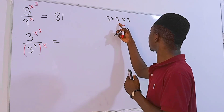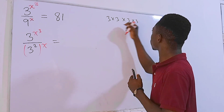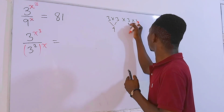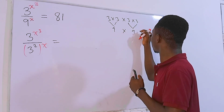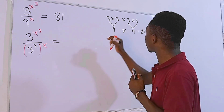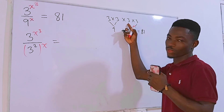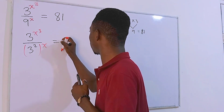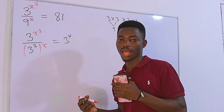3 times 3 is 9, times 3 times 3 gives us another 9, and 9 times 9 is 81. So we have four 3s multiplied together, which means 81 equals 3 to the fourth power.